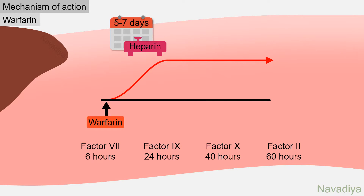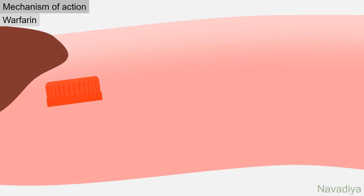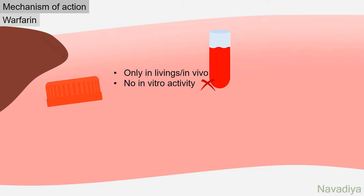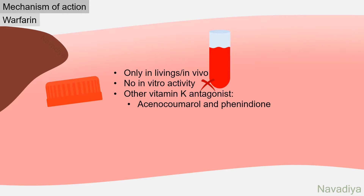This is one reason why we give heparin during the first 5 to 7 days of warfarin therapy — its effect starts immediately and is given until warfarin's effect is completely developed. Since inhibition of clotting factor synthesis is possible only in a living person, warfarin works only in vivo and has no in vitro anticoagulant activity. Other vitamin K antagonists like acenocoumarol and phenindione work by the same mechanism.